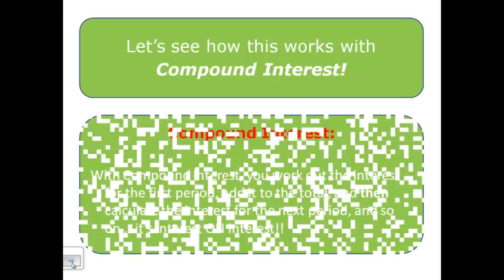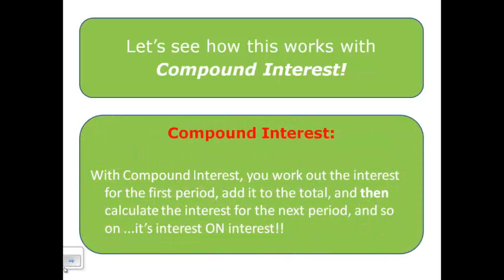Let's define compound interest for your notes. You work out the interest on the first period, you add it to what you had to start with, and then you calculate the interest for the next period, and so on. So basically, you're earning interest on interest.